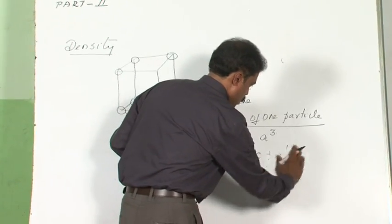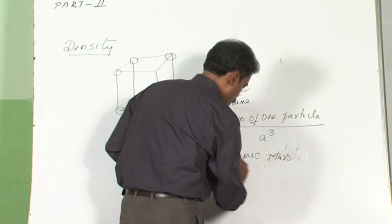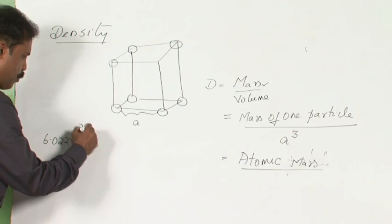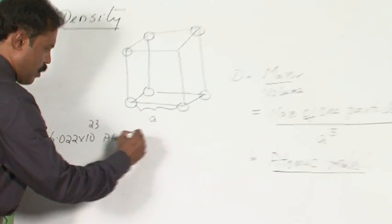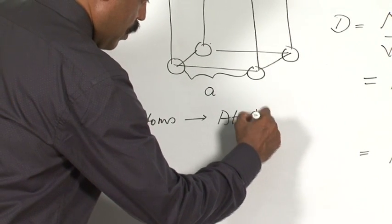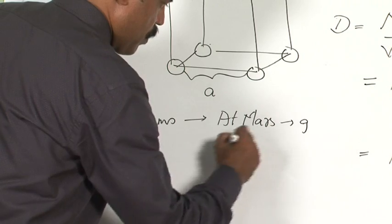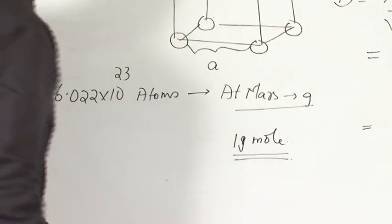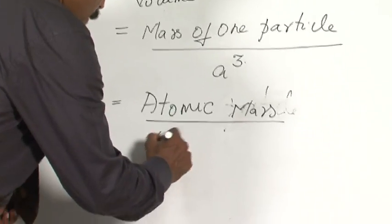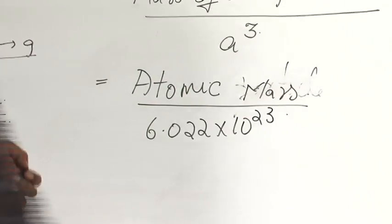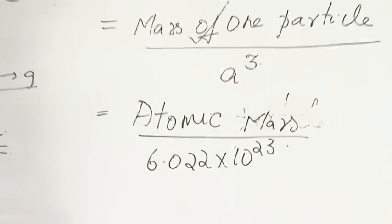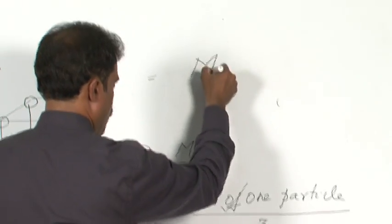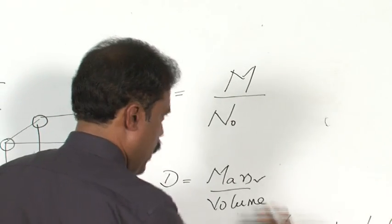The mass of 6.022 × 10²³ atoms gives the atomic mass. If expressed in grams, this is one mole of the substance. So atomic mass divided by Avogadro's number gives the mass of one particle. Therefore density = M / (N₀ · a³), where M is atomic mass and N₀ is Avogadro's number.